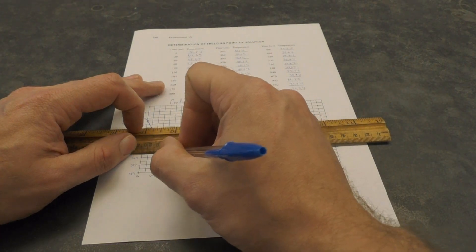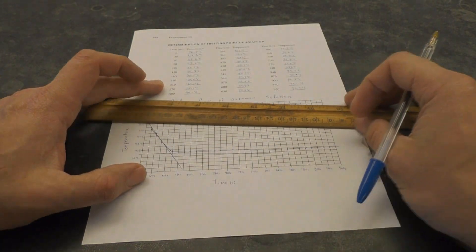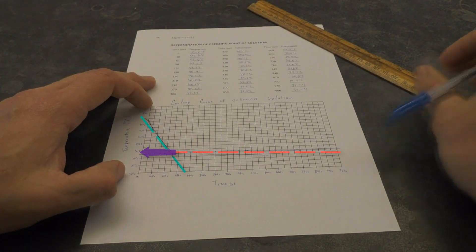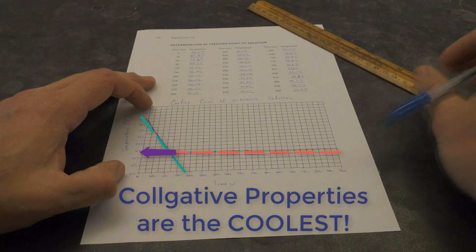Again, don't forget to label this important temperature. This time, it's TF solution. On this graph, you should also label delta T, which is just the difference between your two freezing points. And it's from this delta T that you can figure out the identity of your unknown. All it takes is some serious calculations. Colligative properties are the coolest! Woo! Boom!